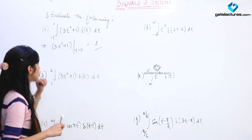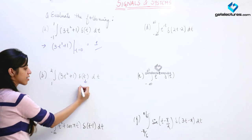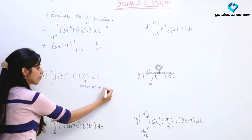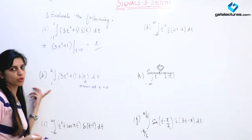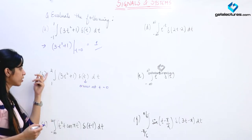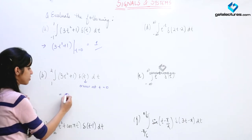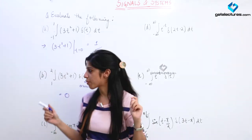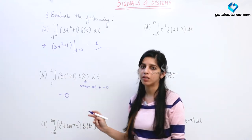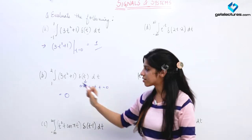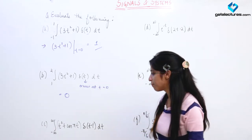In the next example, delta(t) occurs at T equal to 0, but T equal to 0 does not lie between T equal to 1 and 2. So this delta function is not included in these limits, and the value of this function is going to be 0. The sifting property works only if the point of occurrence of the delta function is included between the limits of integration. If it is not included, we get the answer as 0.